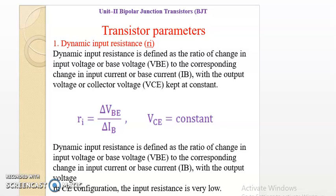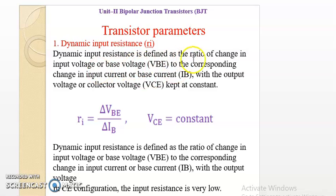Now we have to describe and study transistor parameters. The first parameter is input resistance RI. Dynamic input resistance is defined as the ratio of change in input voltage, or base voltage, to the corresponding change in input current, that is base current, with output voltage — the collector voltage — kept constant.